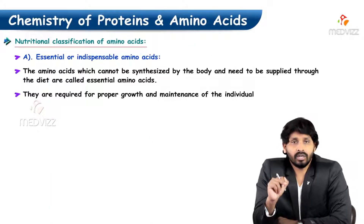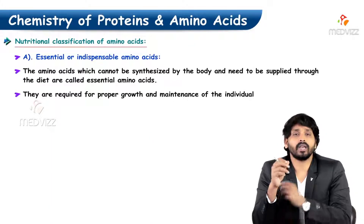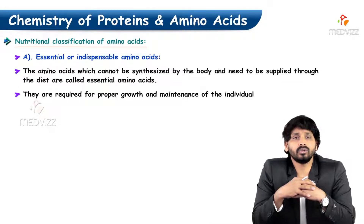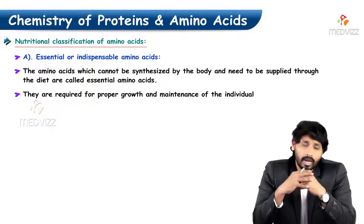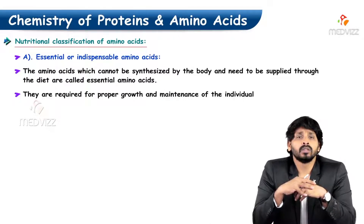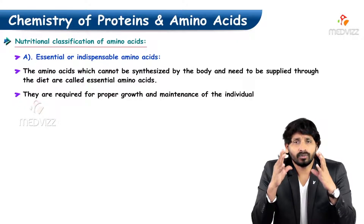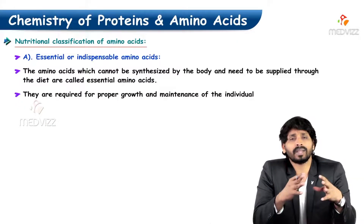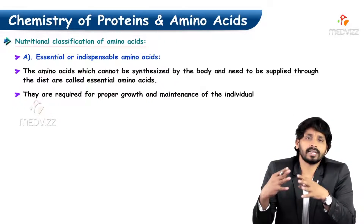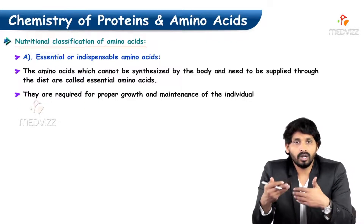Coming to the third classification — the nutritional aspect. Based on nutrition, amino acids are classified into three types. Out of 20 amino acids, few are essential, few are non-essential, and the rest are semi-essential. We will see them one by one.